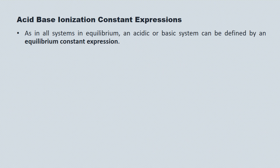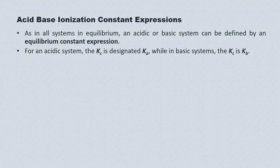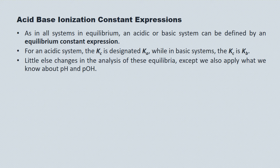As in all equilibrium systems, an acidic or a basic system can be defined by an equilibrium constant expression. For acidic systems, the Kc is designated Ka, and for basic systems, we refer to it as Kb. Little else changes in the analysis of these systems, except we also apply what we know about pH and pOH, referring to that system of equations from grade 11, as well as the Kw equation.